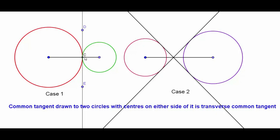Case 1: When two circles touch each other externally, draw a perpendicular line at the point of contact. The line drawn is the TCT for those two circles.